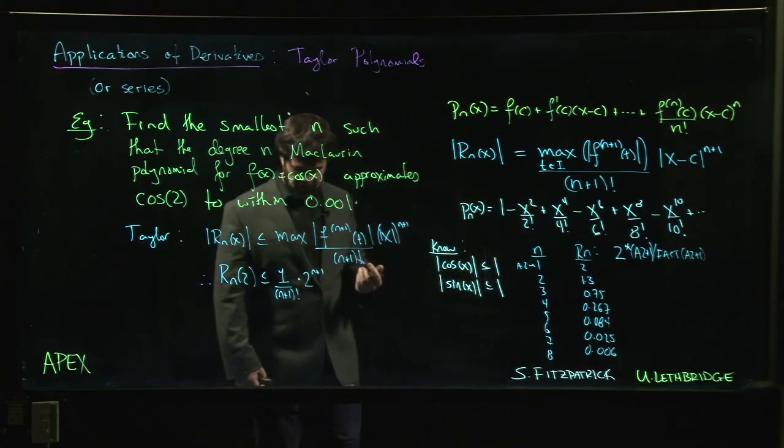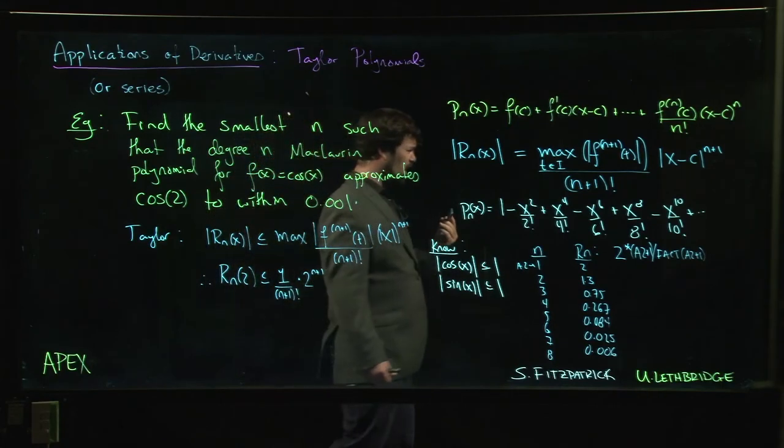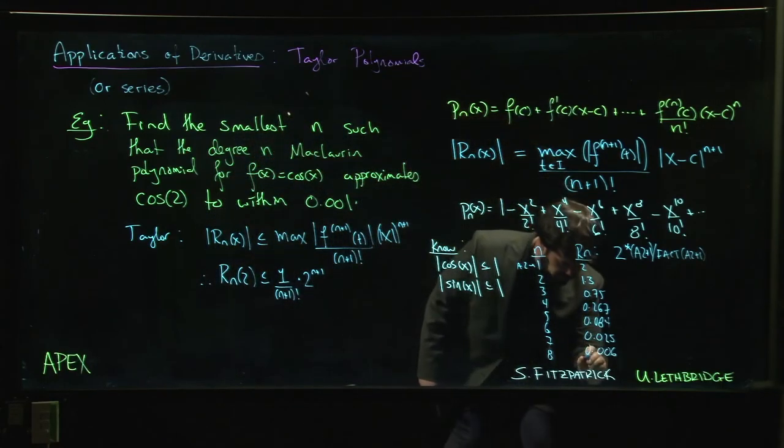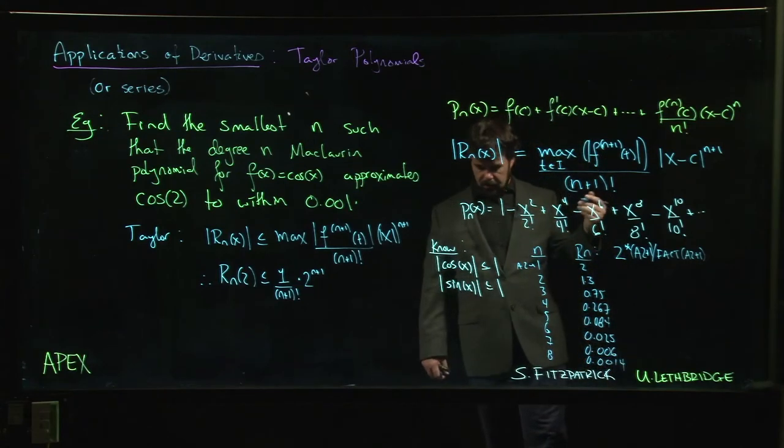And then you try 8 and you got 512 for your 2 to the 9, and then you're dividing by 9 factorial which is like 362,000 something, and you get 0.0014. Almost there but not quite, so you say oh we got to go to 9.